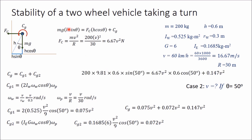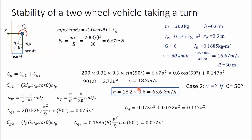Now putting all values into the equilibrium equation: 200 × 9.81 × 0.6 × sin50° = 6.67·V² × 0.6 × cos50° + 0.147·V². Simplifying: 901.8 = 2.72·V², giving V = 18.2 m/s. Converting to km/h by multiplying by 3.6: V = 65.6 km/h. So if the maximum angle of heel allowed is 50°, then 65.6 km/h is the maximum speed the rider can take during the given turn. Thank you for watching this video.